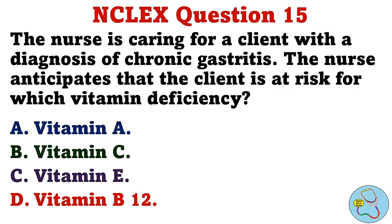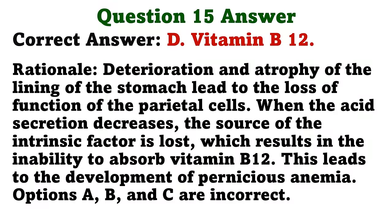The nurse is caring for a client with a diagnosis of chronic gastritis. The nurse anticipates that the client is at risk for which vitamin deficiency? A. Vitamin A. B. Vitamin C. C. Vitamin E. D. Vitamin B12. The correct answer is D: Vitamin B12. Deterioration and atrophy of the lining of the stomach lead to the loss of function of the parietal cells. When the acid secretion decreases, the source of the intrinsic factor is lost, which results in the inability to absorb vitamin B12. This leads to the development of pernicious anemia. Options A, B, and C are incorrect.